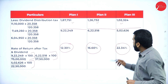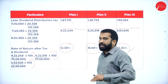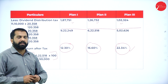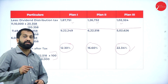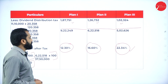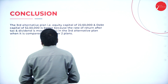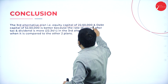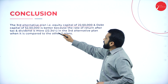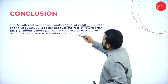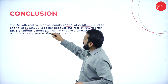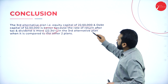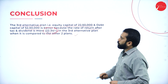Which one is higher? Your 22.34 is the higher one. So the highest one should be considered as your option. We should go for Option 3. Conclusion: the third alternative plan — equity capital of 22.50 lakh and debentures of 52.50 lakh — is better because the rate of return after dividend and tax is 22.34. Hence Option 3 is preferred.